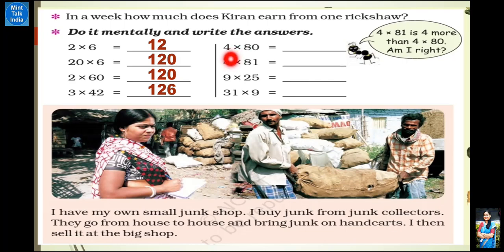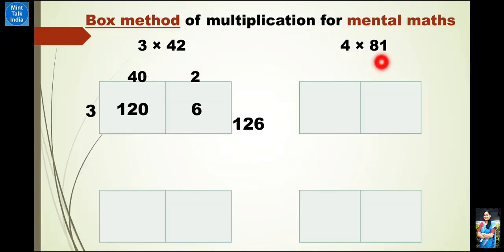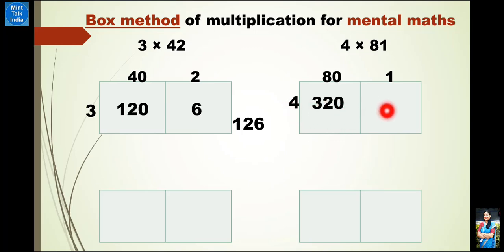Next multiplication: 4 multiplied by 80. 0 ko side me rakhke, 8 multiplied by 4 is 32, aur side me 0 — answer is 320. Next multiplication: 4 multiplied by 81. We will expand 81 and write 80 and 1, aur left side me likhenge 4. Now multiply: 8 × 4 = 32, aur side me ek 0 = 320. Aur 4 × 1 = 4. Add up 320 and 4 — we will get 324. Answer is 324.